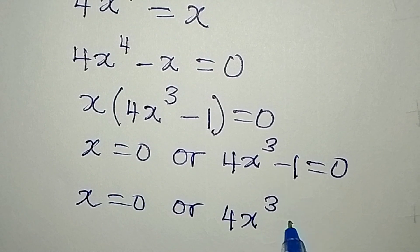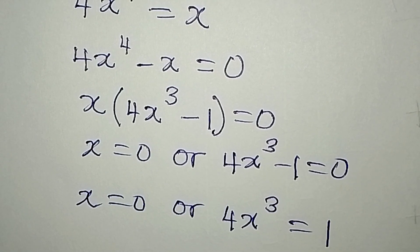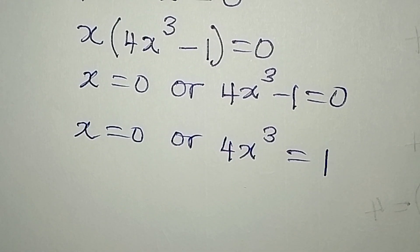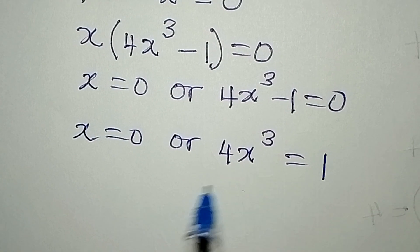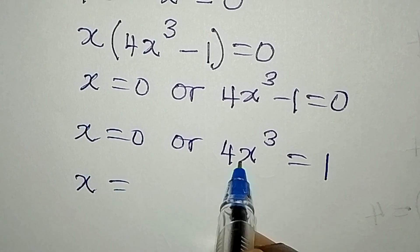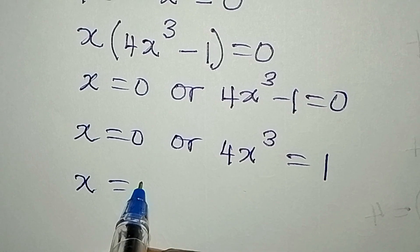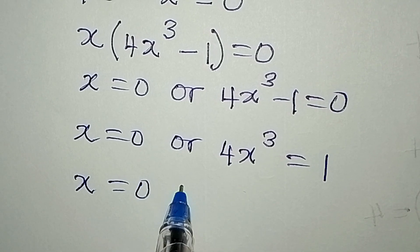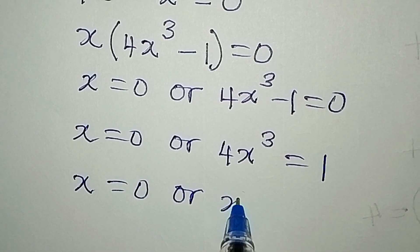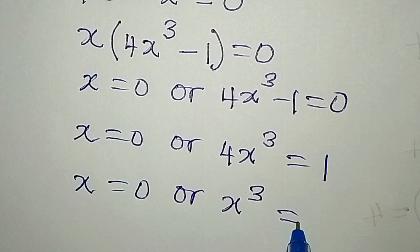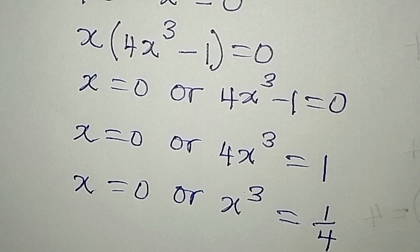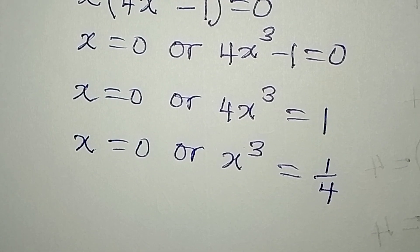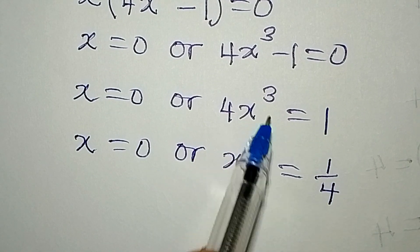Then on the other side we have 4x to the power of 3 equal to 1. So what can I do? Divide both sides by 4, so that x to the power of 3 will be equal to 1 over 4.